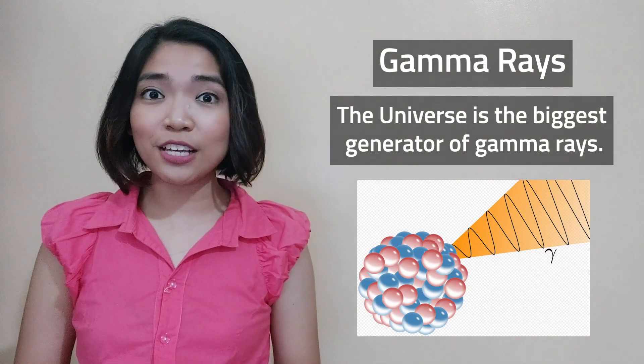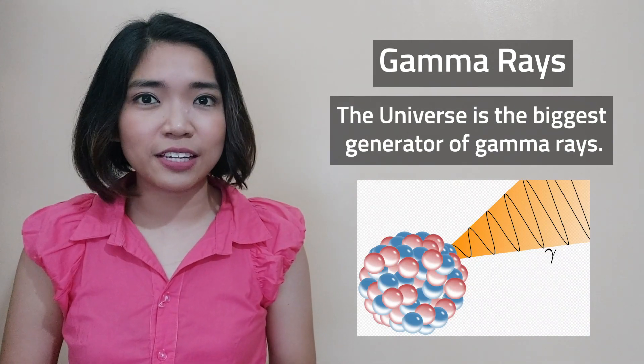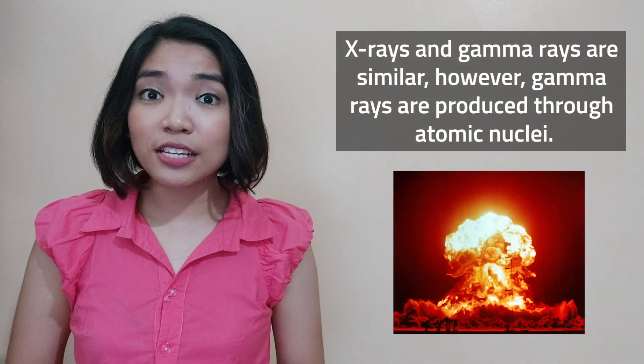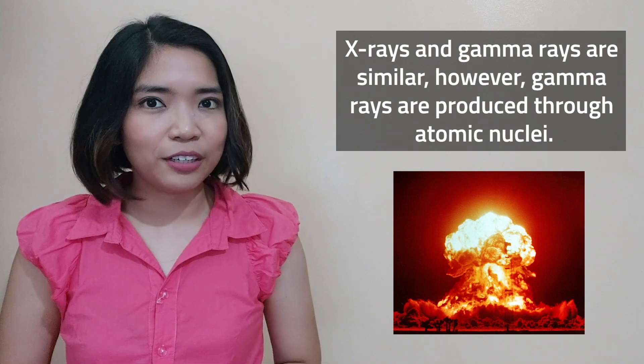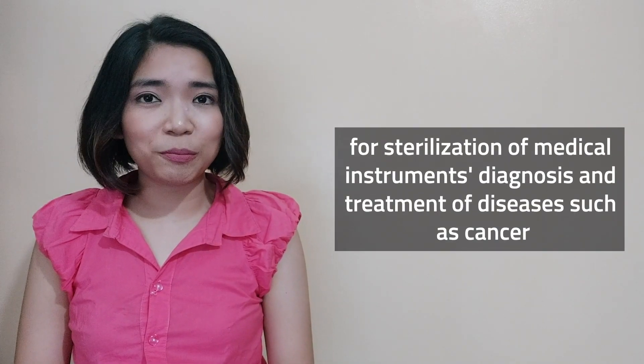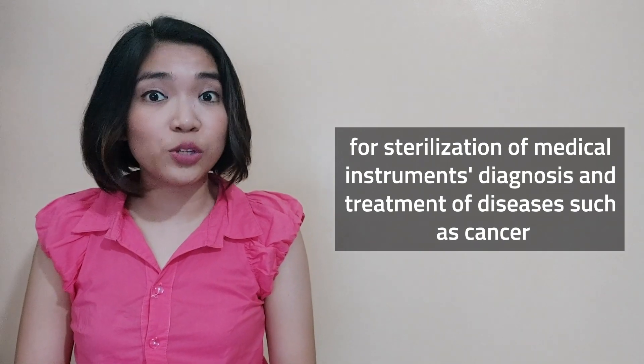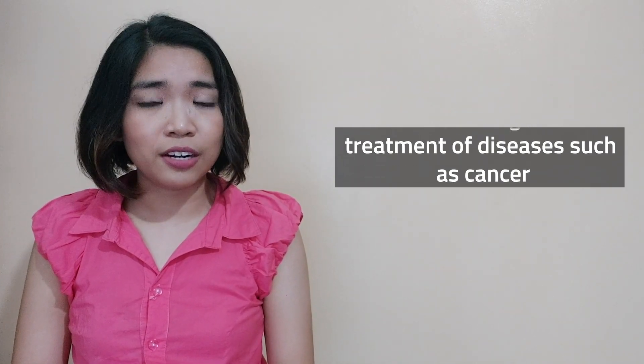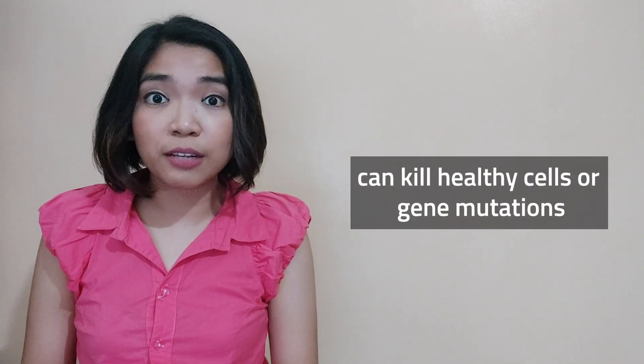The seventh is gamma rays. The universe is the biggest generator of gamma rays. They have the shortest wavelength and the highest frequency. X-rays and gamma rays are similar; however, gamma rays are produced through atomic nuclei. They are useful for sterilization of medical instruments and diagnosis and treatment of diseases such as cancer. However, uncontrolled exposure to gamma waves, which are present in nuclear explosion sites, can kill healthy cells or cause gene mutations.